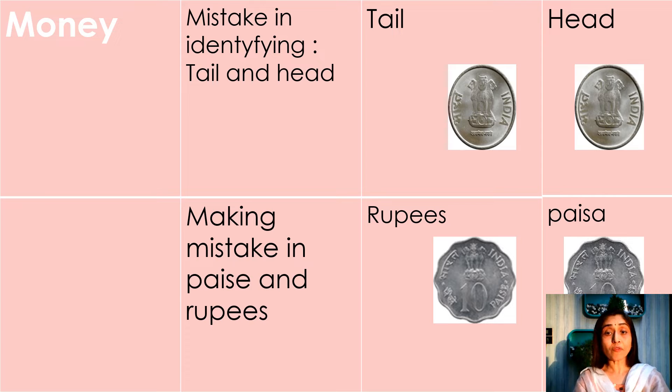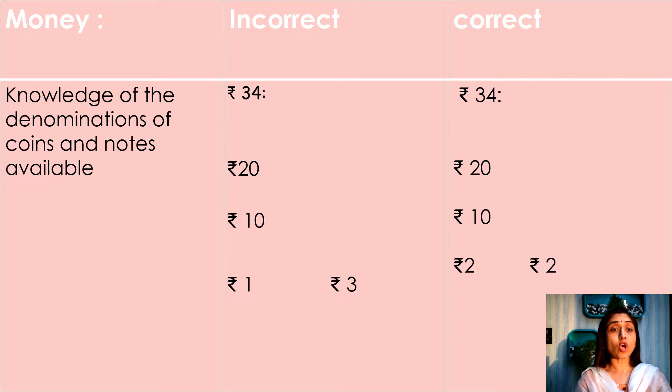Knowledge of the denomination of coins and notes available. It's 34 rupees and they have to find out 20 rupee note and 10 rupee note, which is easy for them. But they make mistakes to find out 4 rupees. Instead of 2 plus 2, they find out 1 plus 3, which is wrong.